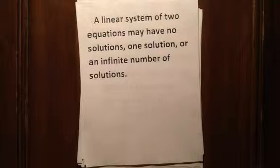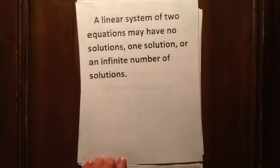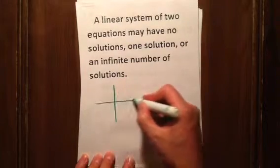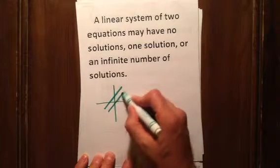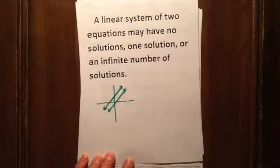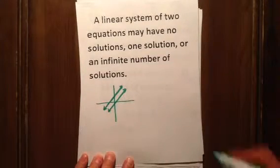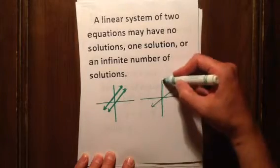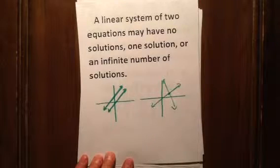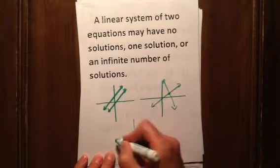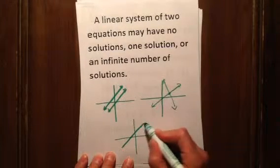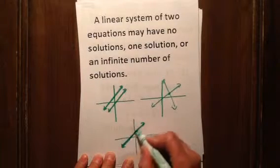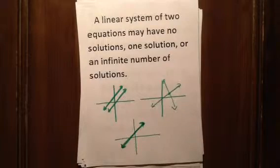A linear system of equations might have no solutions, one solution, or an infinite number of solutions, and those solutions refer to the points of intersection. You could have two lines that are parallel and never intersect — that's a system with no solutions. You could also have two lines that intersect only once, which is the most common scenario, giving one solution. Finally, you can have two lines that are really the same line written twice, overlapping entirely, giving an infinite number of solutions.